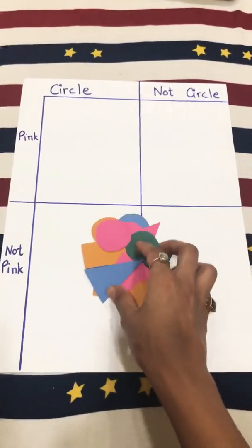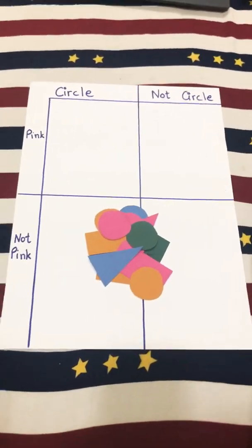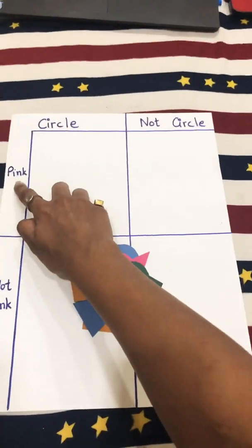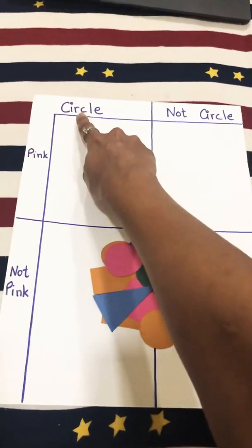This Carroll diagram will not have three or four rows and three or four columns. Here, you are going to choose one color and one shape. Over here, I have chosen pink and circle.